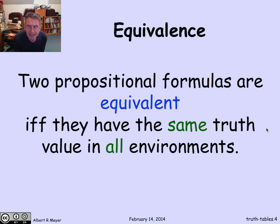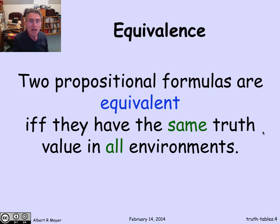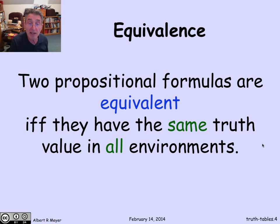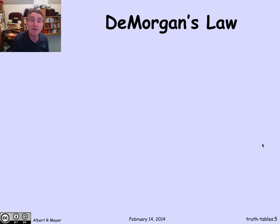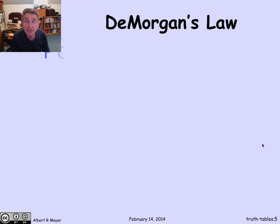A basic idea about propositional formulas is that two of them are equivalent if and only if they have the same truth values in all environments. No matter what the values of the p's and q's and r's are, these two formulas come out to the same truth value. That's what makes them equivalent. Let's look at an important example known as De Morgan's law.